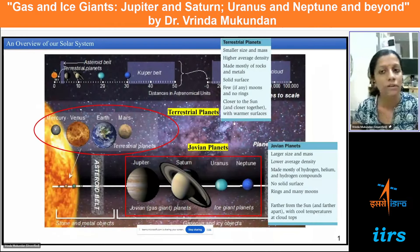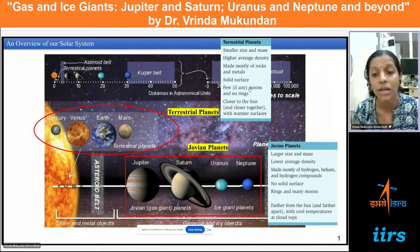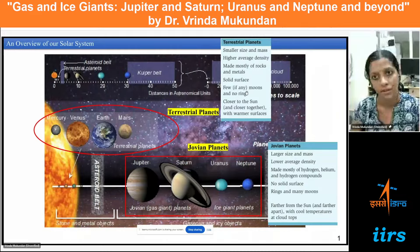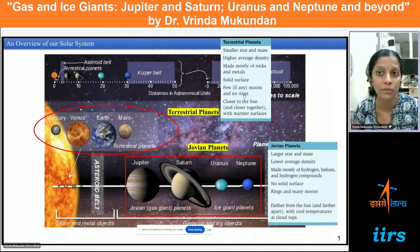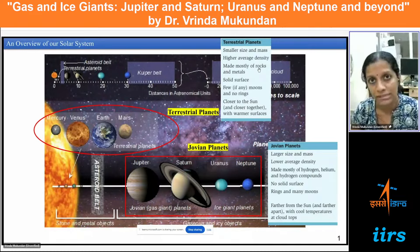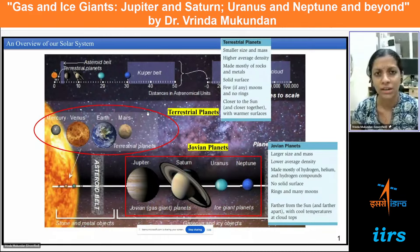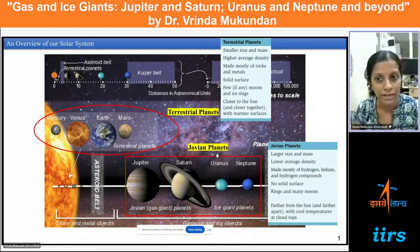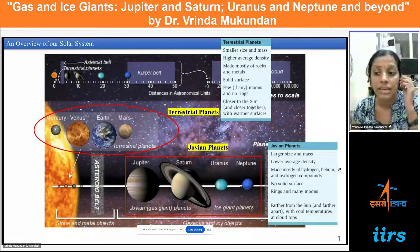Here I have shown a table comparing the different properties of these two groups. The most significant difference is in their composition. The inner planets are mainly composed of rocks and metals — we say they are rocky planets. Whereas the Jovian planets are primarily composed of the gases hydrogen, helium, and hydrogen compounds.